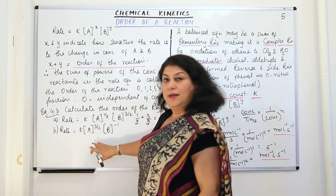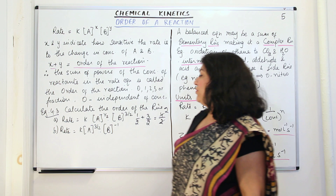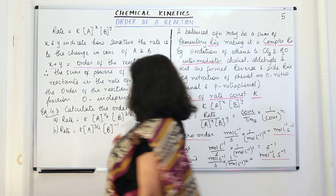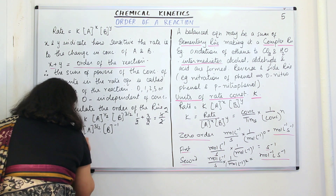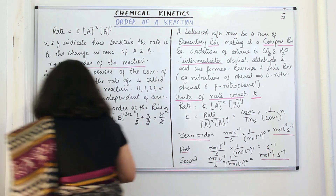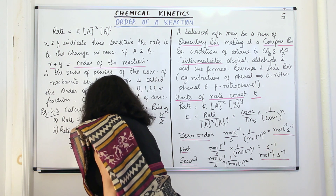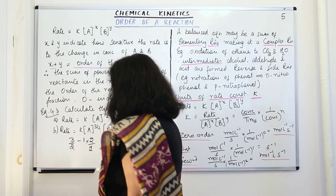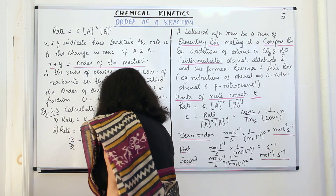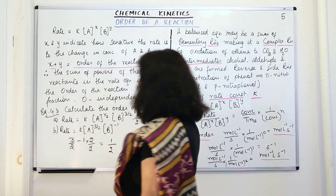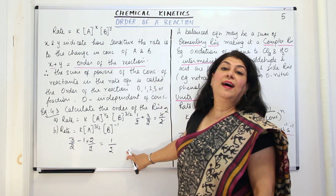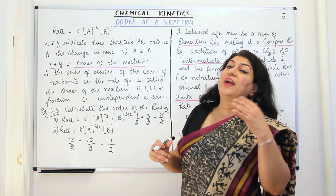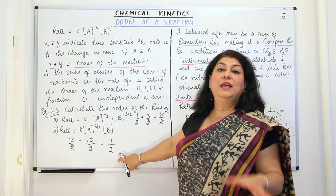For the second reaction, the rate equation is K times [A] to the power of three-by-two and [B] to the power of minus one. So we calculate three-by-two plus minus one. Multiplying one by two over two, we get three-by-two minus two-by-two, which equals one-by-two. So the order of this reaction is one-half. The order of a reaction may not always be a whole number — it can be a fractional number too. This shows that it can be a fraction.